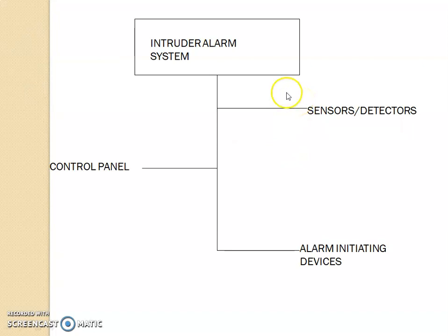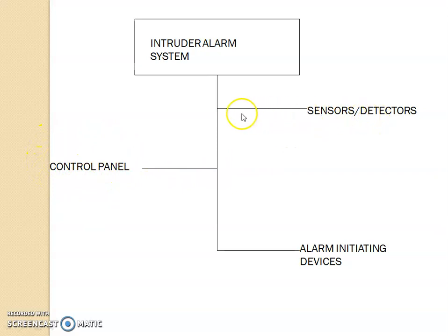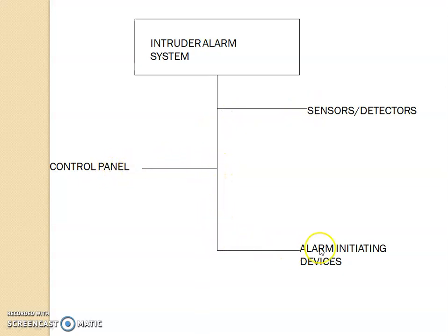If you look at the components, we have sensors and detectors, then we have alarm initiating devices. The important thing in Intruder Alarm Systems is the control panel which receives the signals from the sensor. The detection happens, which is information transmitted into the control panel. Based on this, the control panel will take a decision and is connected to the alarm initiating devices which sounds the alarm.